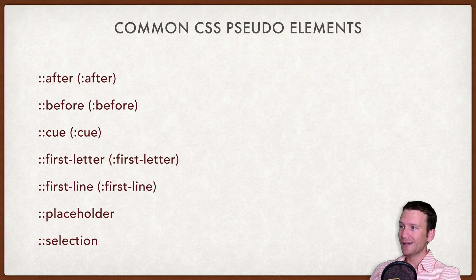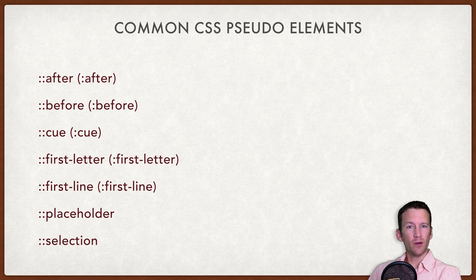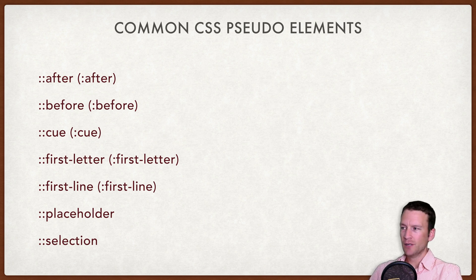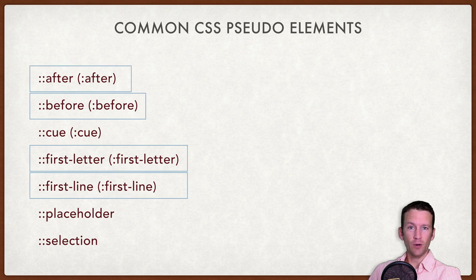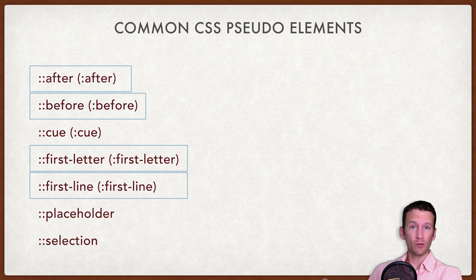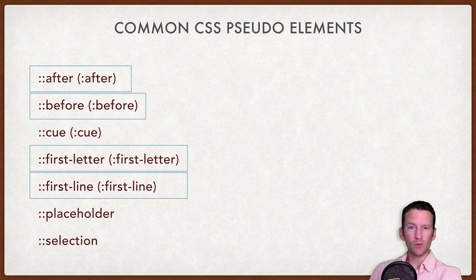Here are the available pseudo-elements inside browsers — these are only the ones that are generally implemented. There are a few other experimental pseudo-elements in certain browsers. In this tutorial we're just going to look at four: after and before, which are by far the most common, and then first-letter and first-line just so you can see how these things work. So let's jump right into code examples and start with those four.